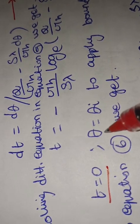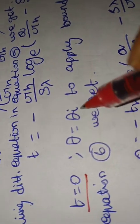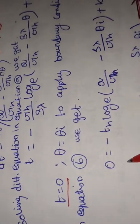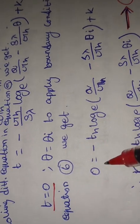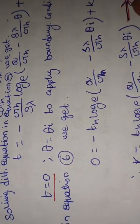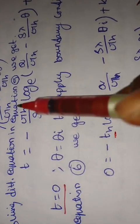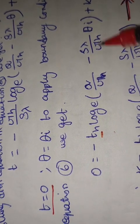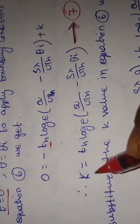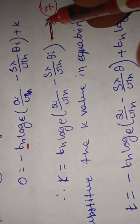Applying the boundary condition: at t = 0, theta = theta_i (the initial temperature). Substituting t = 0 and theta = theta_i into equation six gives the value of k. Since G·H/(S·λ) equals T_H, we replace that term, then solve for k and label it as equation seven.